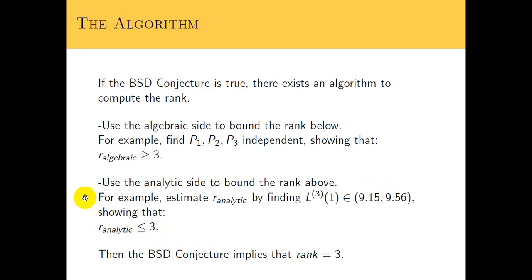This next part is pretty cool — it took me an afternoon of reflection to believe it. If the conjecture is true, that means the two ranks are equal: analytic and algebraic. It turns out there's an algorithm to compute the rank. The idea is to use the algebraic side to bound the rank below, and use the analytic side — what we just talked about for the L-function — to bound the rank above. Then we want to show that those two bounds are equal using this algorithm. If something is at most and at least the same number, then it must be that number.